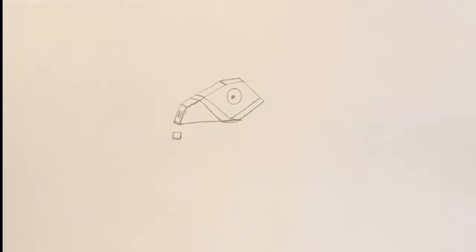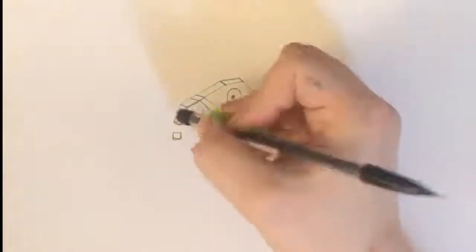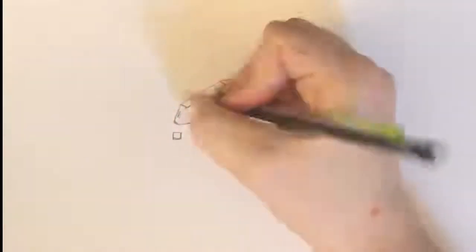Step 4. Draw a small circle at the base of the snout and extend a narrow rectangle from it. This outlines his lower jaw.